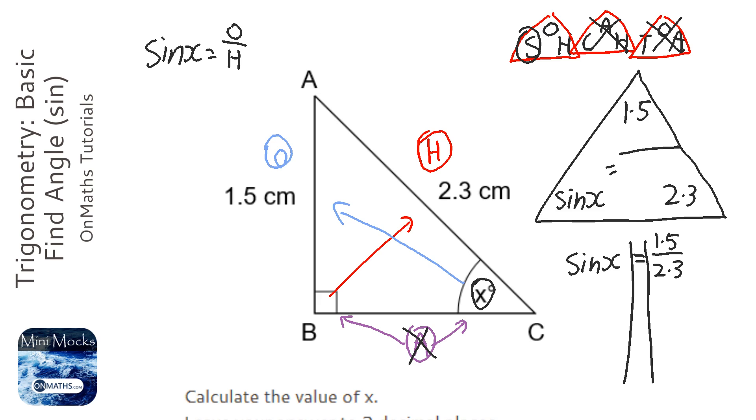Now, to get x on its own, we need to get rid of this sin. And to do that, we do something called the inverse sin.